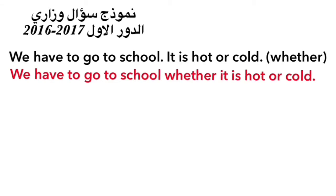هذا نموذج السؤال الوزاري دور الأول 2016-2017: We have to go to school — هذه الجملة الأولى — الجملة الثانية: it is hot or cold. بين قوسين: weather. عندنا ملاحظتين: الملاحظة الأولى أنه أعطانا بين الأقواس فقط weather بدون or. الجملة تقريباً مرتبة لأن or موجودة بالجملة الثانية بعد hot. فقط نضع whether بوسط الجملة فتكون: We have to go to school whether it is hot or cold.